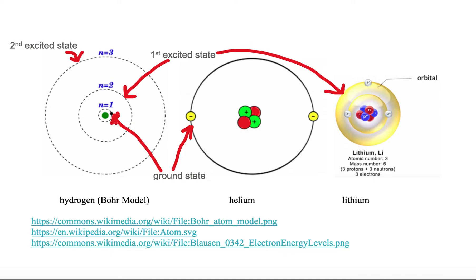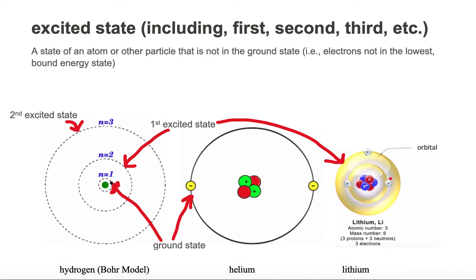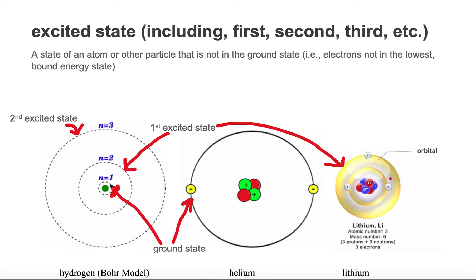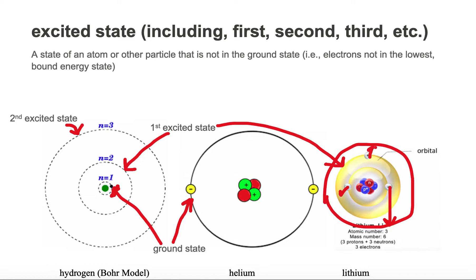The ground state is where the electrons are located closest to the nucleus. The first excited state is the next one up above ground. The second excited state is the next one up above the first excited state. An excited state is a state of an atom or other particle that is not in the ground state — the electron or electrons are not in the lowest bound state. Looking at lithium, if we move all the electrons out of the ground state and put them in a higher level, then the whole atom is in an excited state.